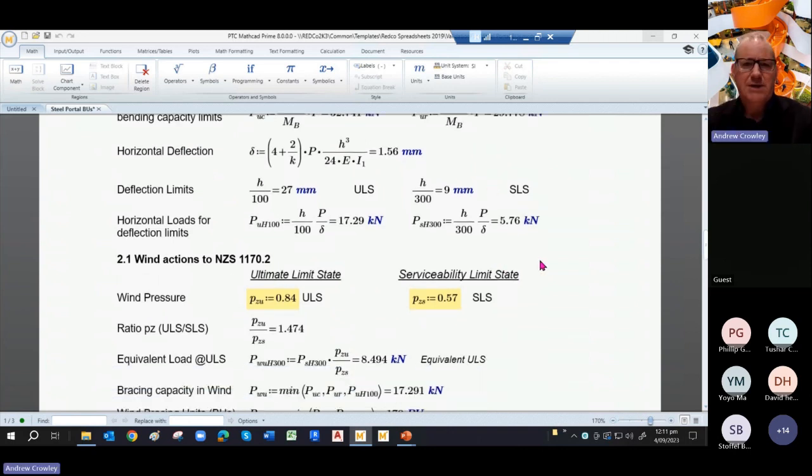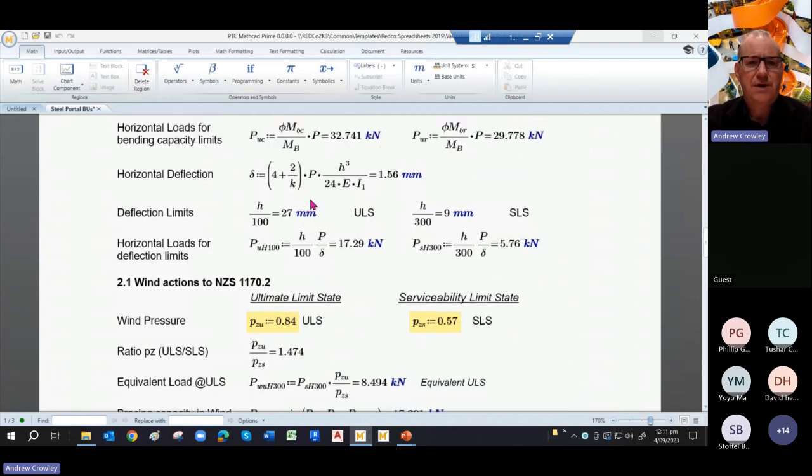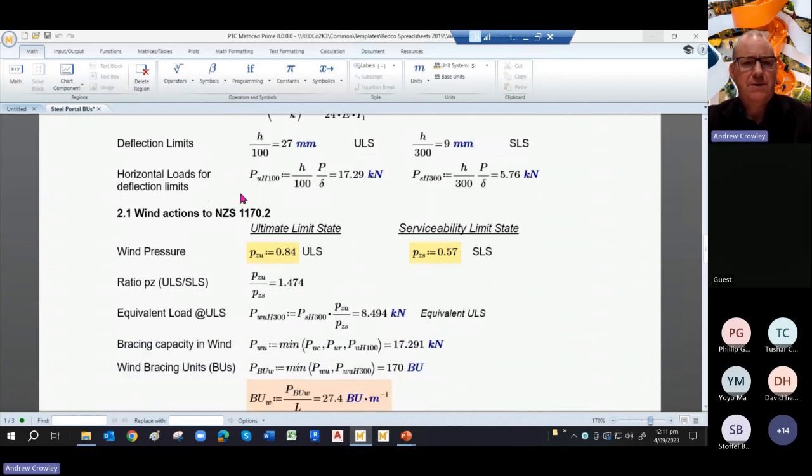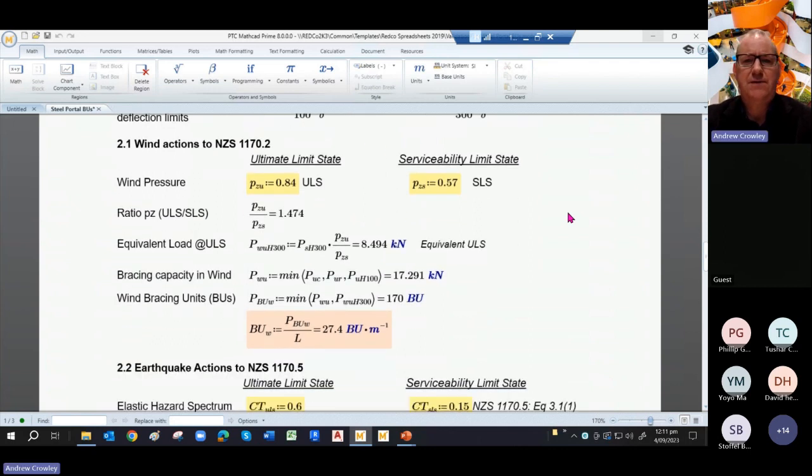We also get a limitation of 27 millimetres for the ULS state based on our notional deflection for a 1 kilonewton point load, factoring that up again. So factoring that through, the horizontal loads for the deflection limits come down to 17.29 and 5.72 respectively at ULS and SLS. So that's the first portion of the calculation.